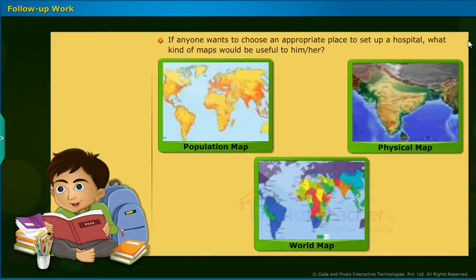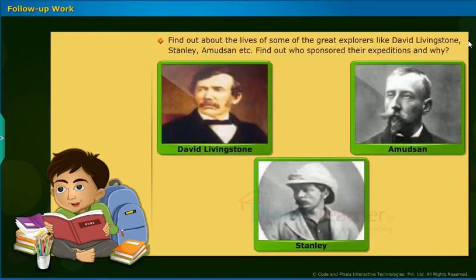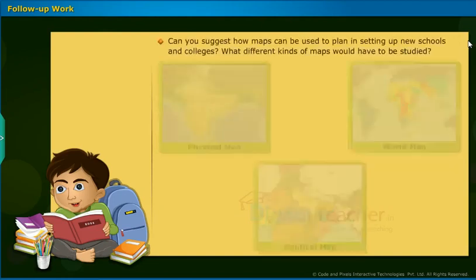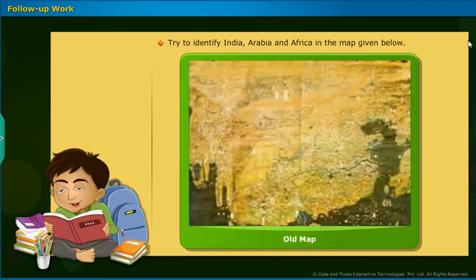If anyone wants to choose an appropriate place to set up a hospital, what kind of maps would be useful? Find out about the lives of some of the great explorers like David Livingstone, Stanley, Amundsen, etc., and who sponsored their expeditions and why. Can you suggest how maps can be used to plan setting up new schools and colleges, and what different kinds of maps would have to be studied? Try to identify India, Arabia, and Africa in the map given below.